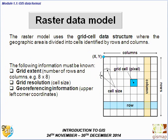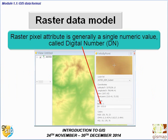What we need to know about the raster data model: the origin XY is top left, the grid extent — that is, how many rows and columns are in the raster — the grid resolution or cell size, and the georeferencing information. In the raster data model there is one digital number per cell, and in an image such as a digital elevation model, that digital number represents the elevation, for example.